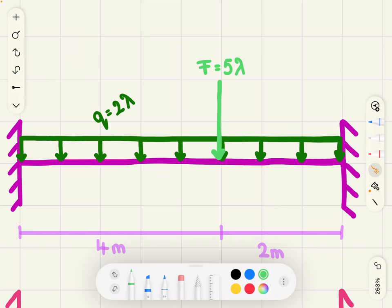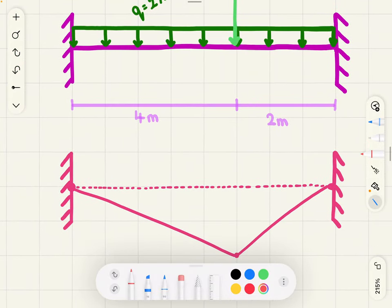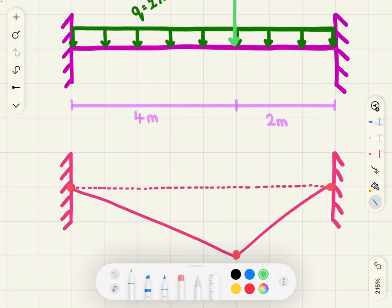We're going to start by drawing the collapse mechanism. So we're going to have a plastic hinge at each of these pinned ends and one here. Now, for the angles, let's assume this one's theta. And from this, using trigonometry, we can then find this length in terms of theta and this angle in terms of theta.